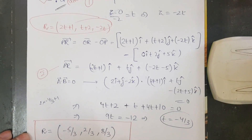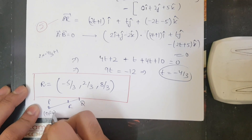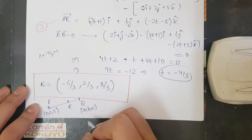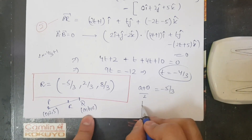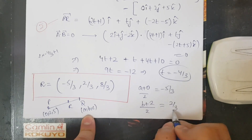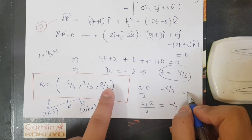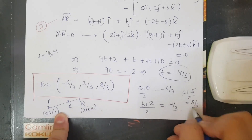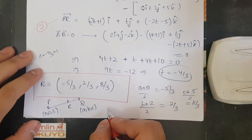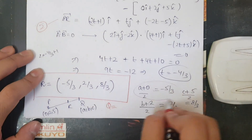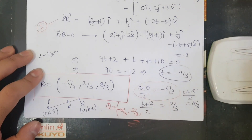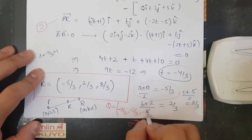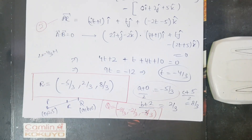Using the midpoint formula: (a + 0)/2 = −5/3, so a = −10/3... wait, recalculating: (a + 0)/2 = −5/3 gives a = −10/3. Then (b + 2)/2 = 8/3 gives b = 16/3 − 2 = −2/3. Wait — computing directly: (b + 2)/2 = 2/3 gives b = 4/3 − 2 = −2/3. And (c + 5)/2 = 8/3 gives c = 16/3 − 5 = −5/3. So the image point Q = (−8/3, −2/3, −5/3).